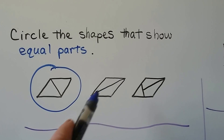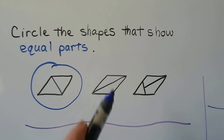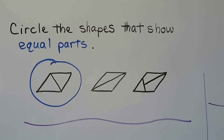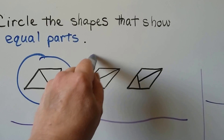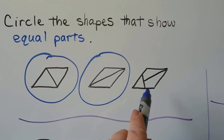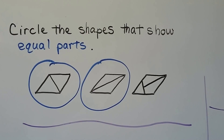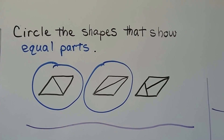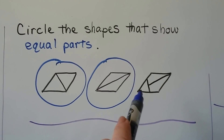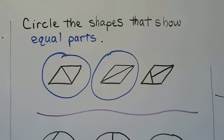What if the line was going this way? Would that be two equal parts? Yes, it would. What if the piece of candy was cut like this? Would it be fair and would everyone get an equal share? Somebody would get a little piece, wouldn't they? So that's not equal parts.